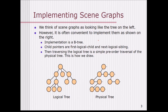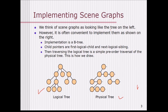How do we implement scene graphs? We assume scene graphs as a logical tree on the left, but it is often convenient to implement them differently. The physical implementation is actually a B-tree. The child pointers are first logical child and next logical sibling, and traversing the logical tree is a simple pre-order traversal of the physical tree.